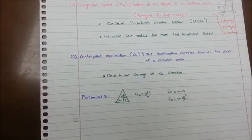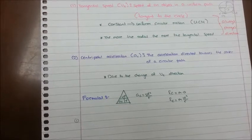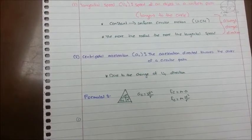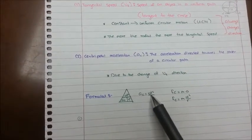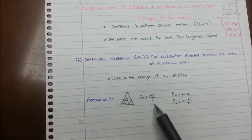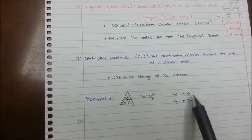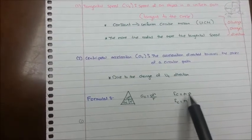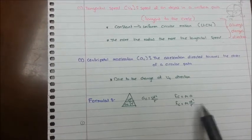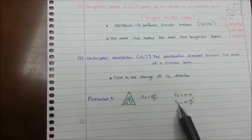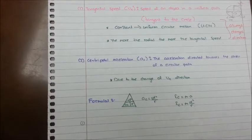In this lesson, we have two formulas. The first formula is centripetal acceleration: AC equals Vt squared over R. And our second formula is FC equals M times A, where A is Vt squared over R, so our formula becomes FC equals M times Vt squared over R.